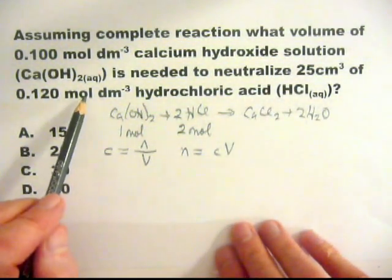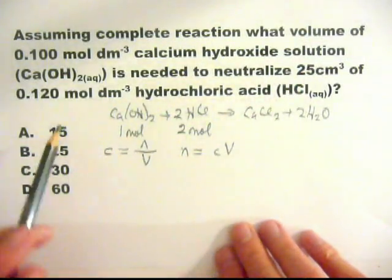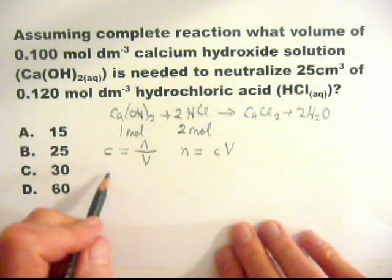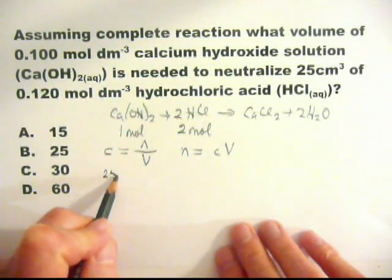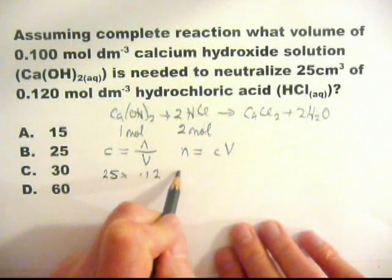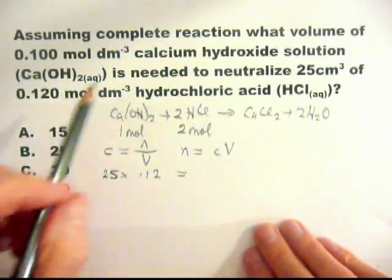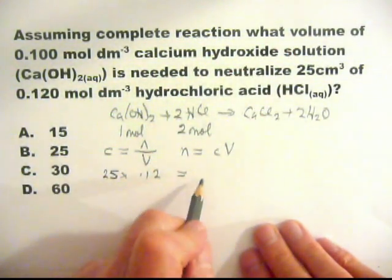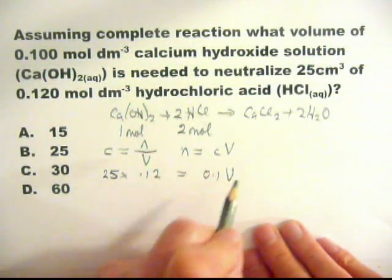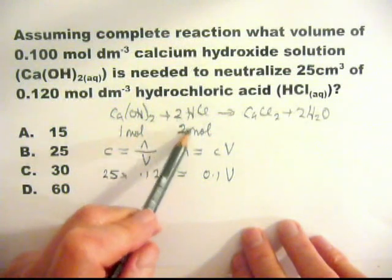Remember the formula we are going to use relating concentration equals moles N over V. C equals N over V. We are going to rearrange it. N equals CV. And we are simply going to use N, the number of moles for calcium hydroxide, and N, the number of moles for HCl, hydrochloric acid. We have given everything for hydrochloric acid, both the volume and the concentration. So let's put those down. That's 25 times 0.12. And then we put down for the calcium hydroxide, it's 0.1 and V. Now we have to deal with this two.